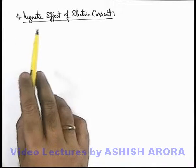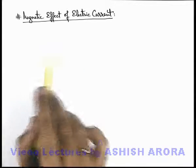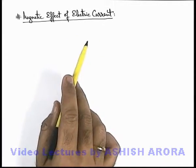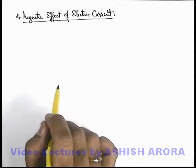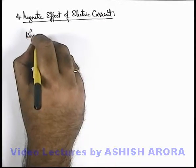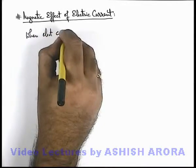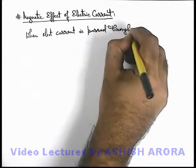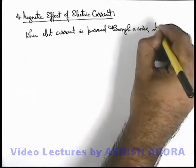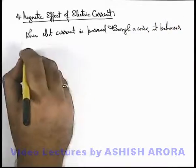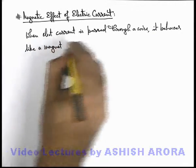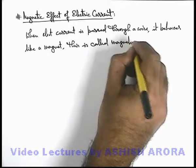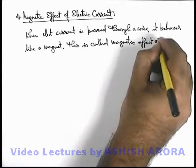Now we'll study about the magnetic effects of electric current. In previous sections we've studied about the heating effect of electric current. Similar to that, when electric current is passed through a metal wire it produces magnetic effects. When electric current is passed through a wire, it behaves like a magnet. This is called the magnetic effect of electric current.